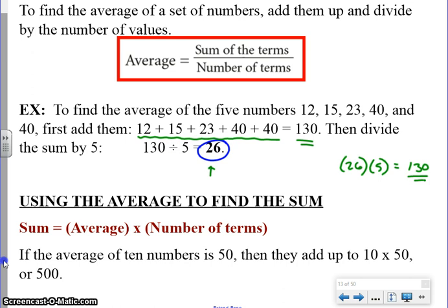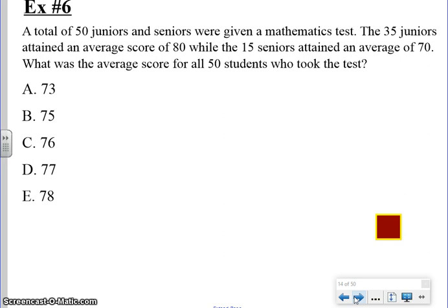Here's an example in number six. It says that a total of 50 juniors and seniors were given a math test. The 35 juniors attained an average score of 80, while the 15 seniors attained an average of 70. What was the average score for all 50 students who took the test? This is not going to be just the simple add them all up and divide by 50. We have to be a little bit more systematic here.